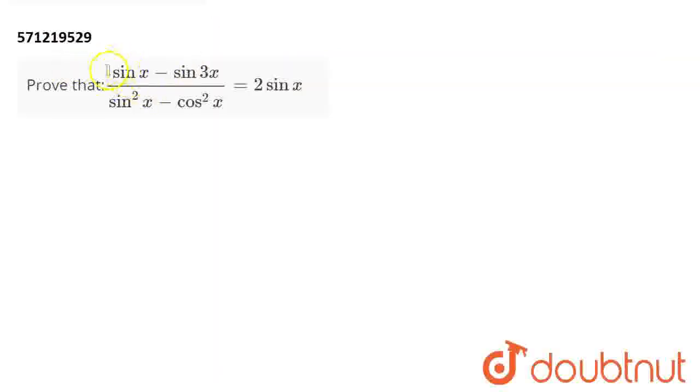Hello guys, today we have to prove that sin x minus sin 3x divided by sin square x minus cos square x is equal to twice of sin x. Now look closely on the left-hand side.